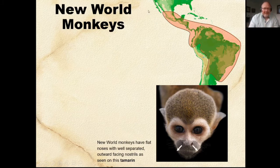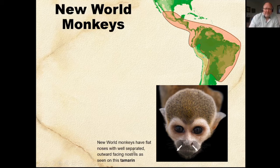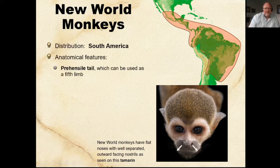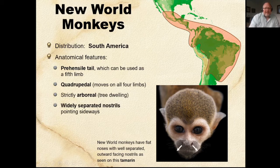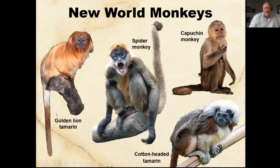Now we're looking at the new world monkeys. 'New world' refers to the Americas. New world monkeys have flat noses with widely separated, outward-facing nostrils, as seen on this tamarin monkey. New world monkeys are in South America, have a prehensile tail, are quadrupedal, strictly tree-dwelling, and have widely separated nostrils.